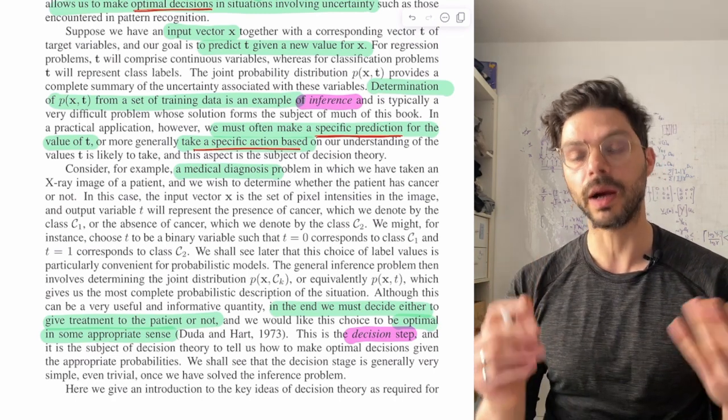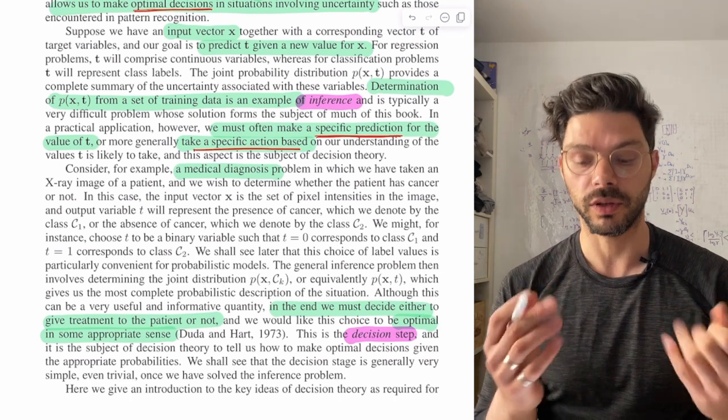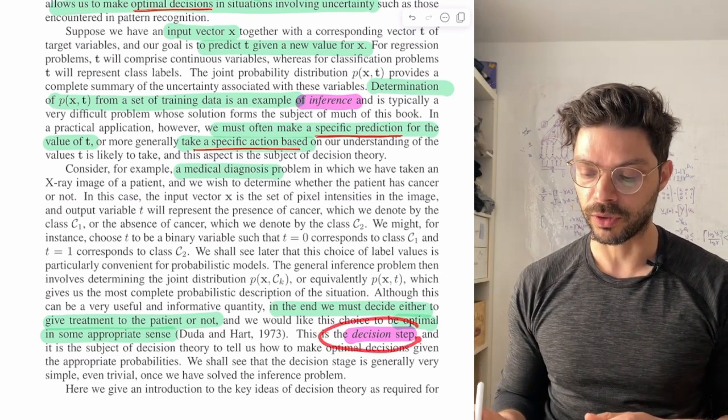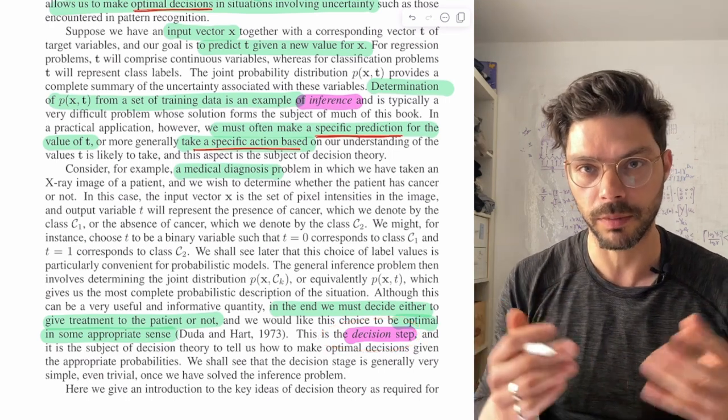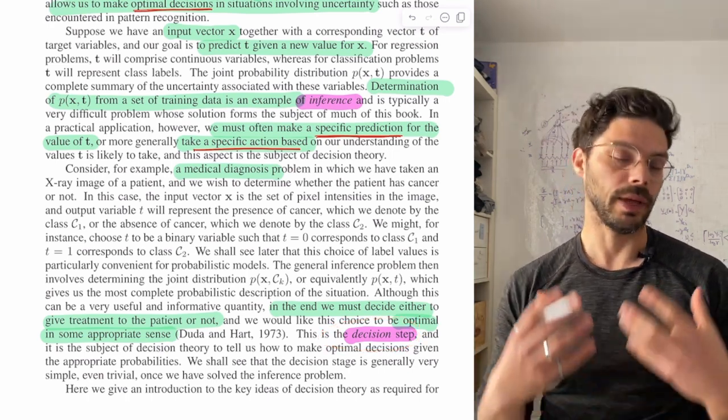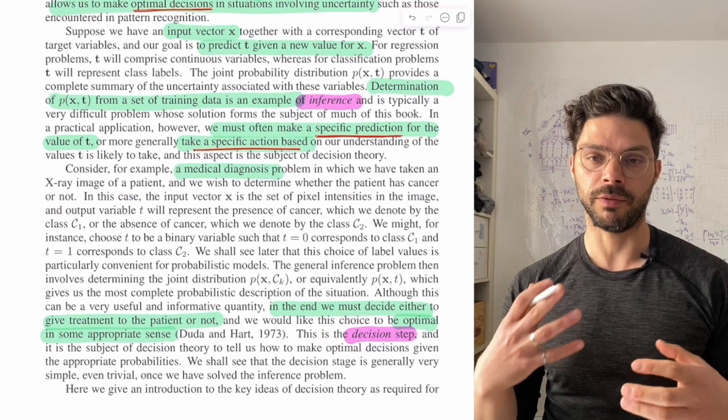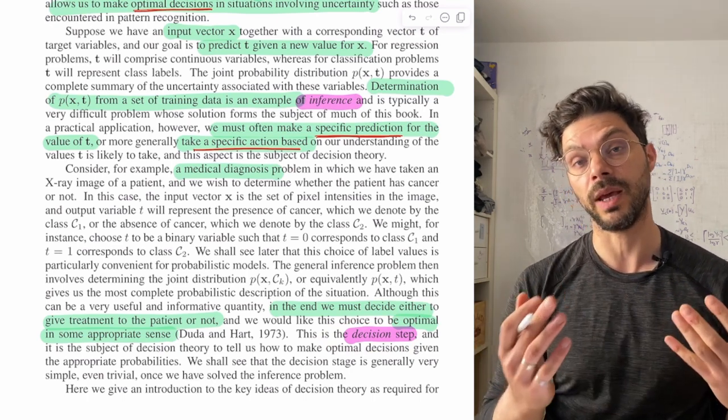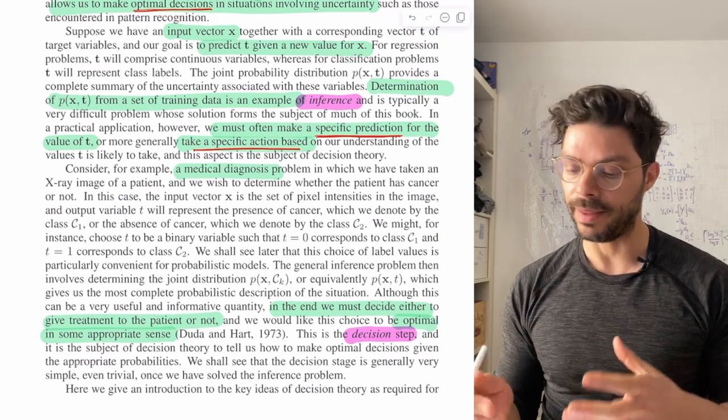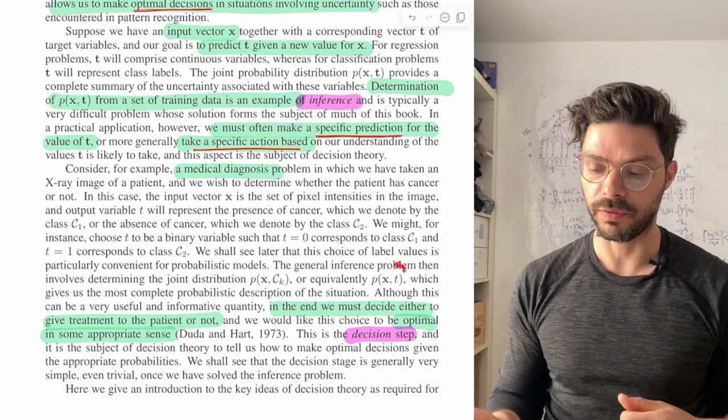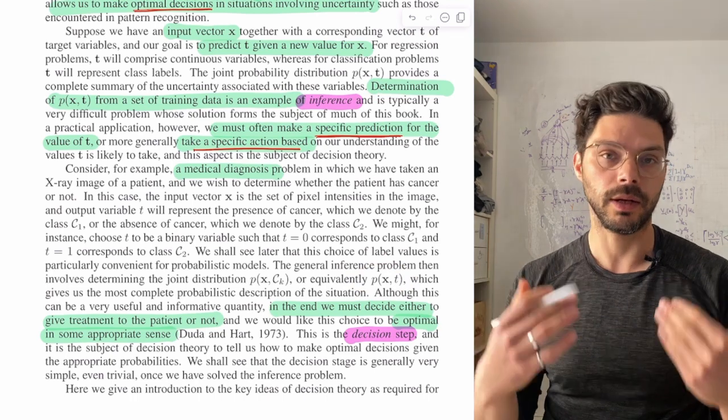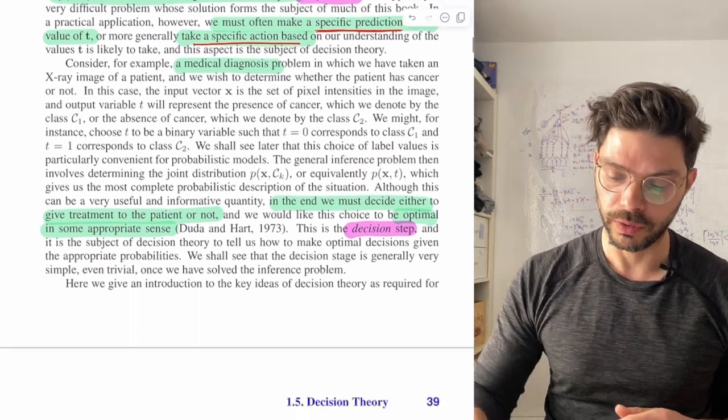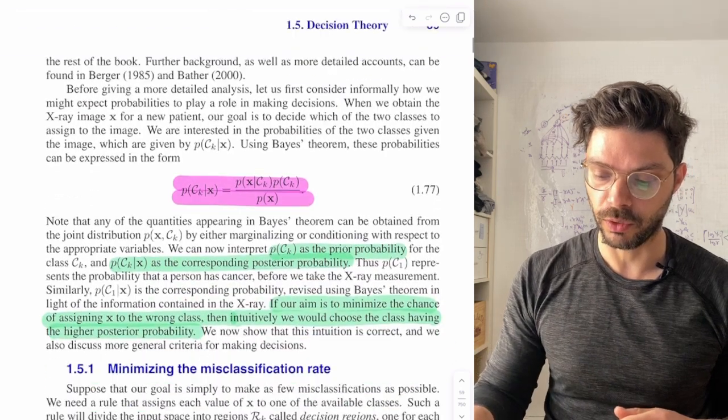But of course, we can't just stop there. We need to make a decision. So should we give a person the treatment? And this is the very important decision step, and that's where decision theory comes in. Typically the way it's set up is that you provide some kind of a loss that says what is the cost of essentially making the wrong decision. And then you combine that with your quantification of uncertainty to then arrive at your final decision. So that's what the whole game is about.